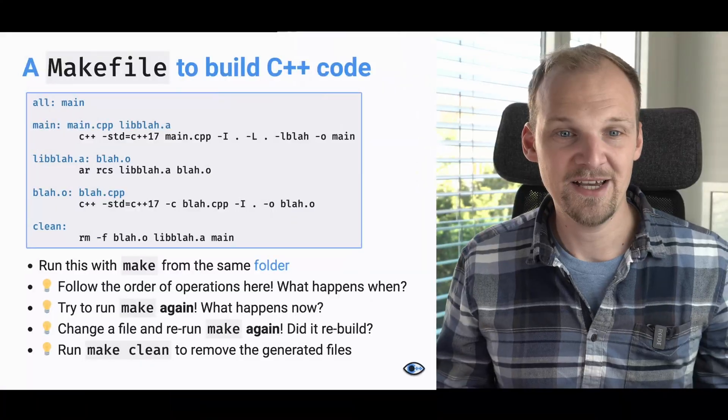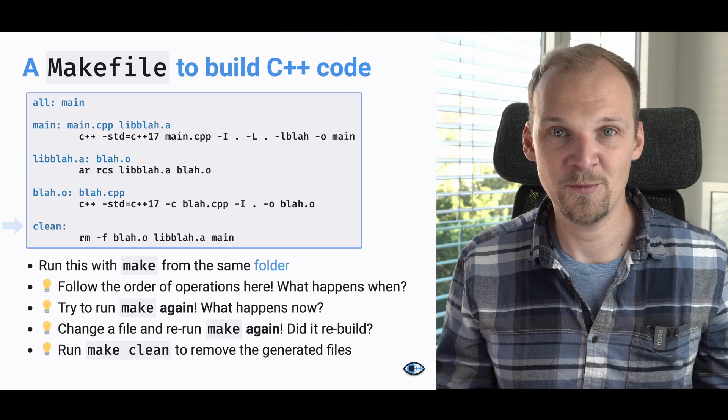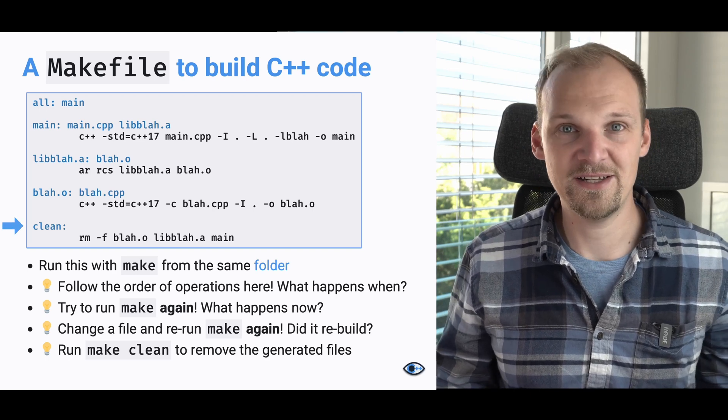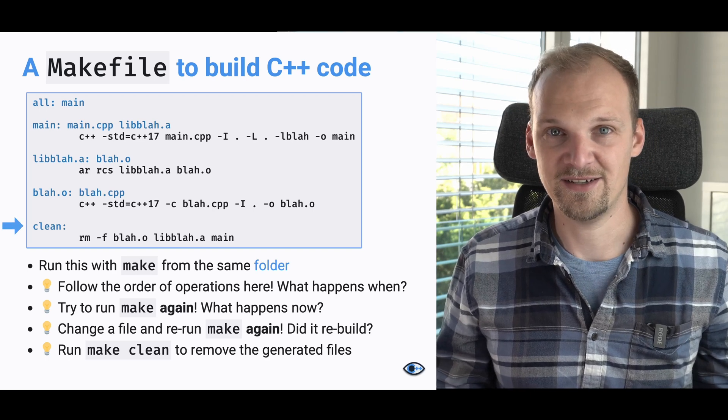I really urge you to try this: copy this file to the folder with your CPP files from before and call make. Then try to call make again and see what happens. Now if you change one of the files, try to see what happens after you call make again — will it rebuild or not? I think it really helps to just play around with this a little bit to understand more about how it works. Finally, you can always run make clean, which is our last target in this makefile, to clean all of the files and start over.